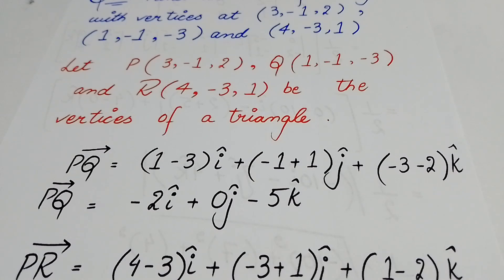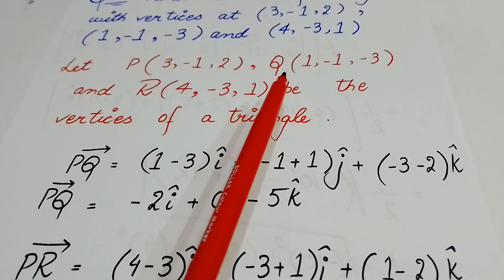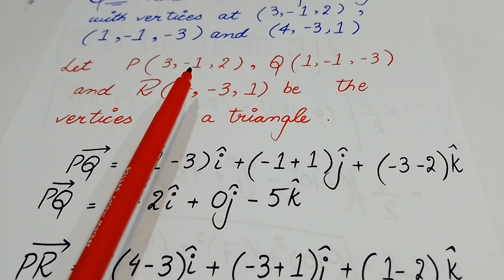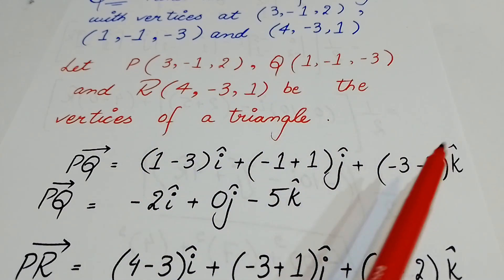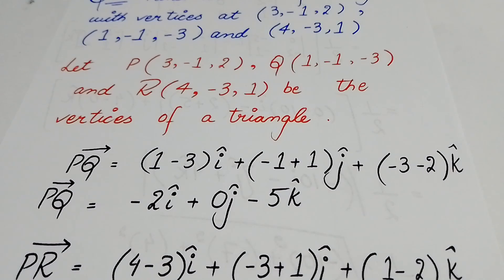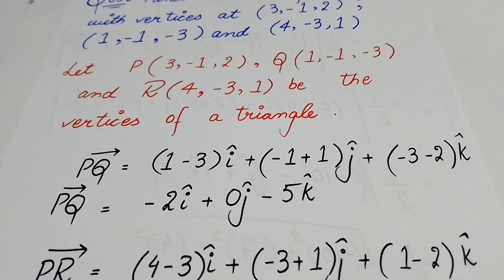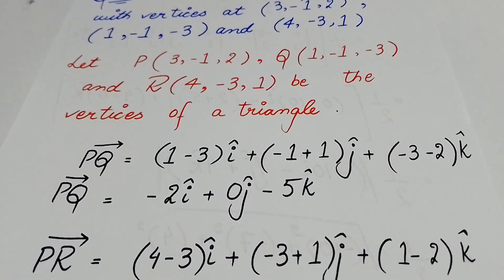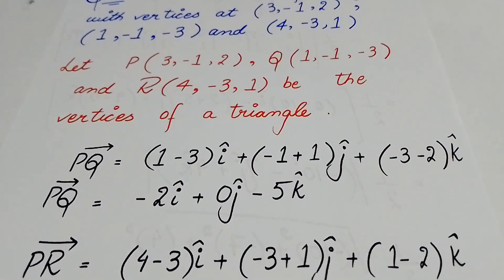Now, after this, I will find out the position vector. When we find the position vector PQ, the answer simplifies to: minus 2i-cap plus 0j-cap minus 5k-cap. According to this, if I move further, I have to find out the next position vector.